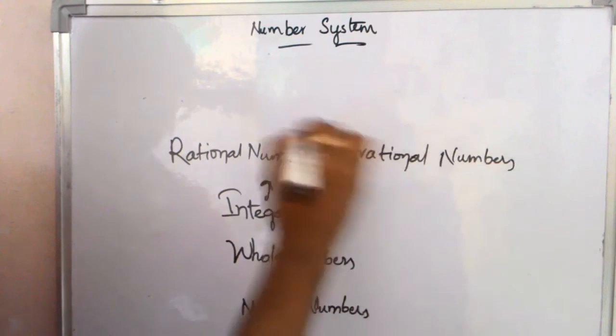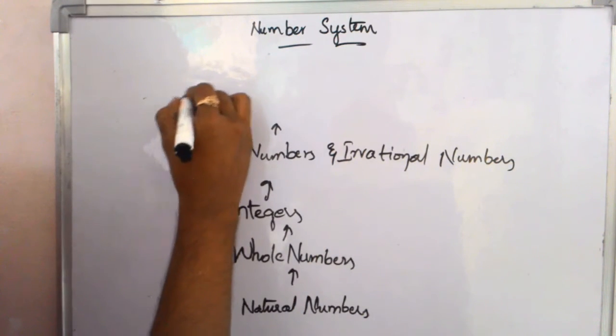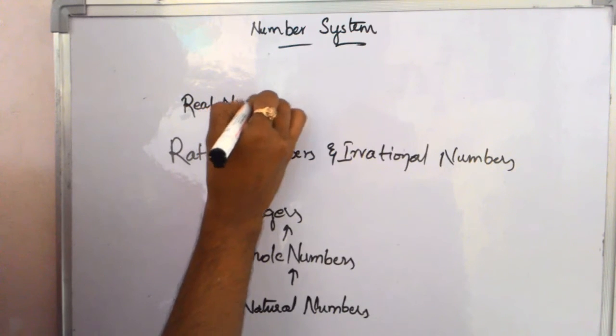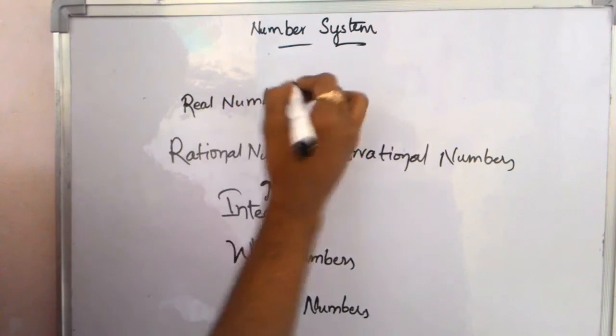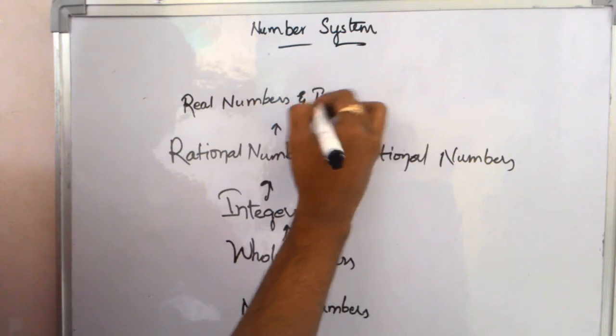And next, real numbers and imaginary numbers. Real numbers are like 4 root 3, 2 root 3. These are in real numbers.